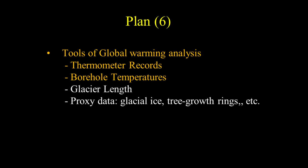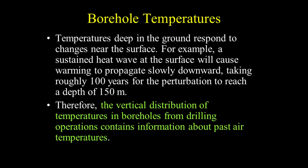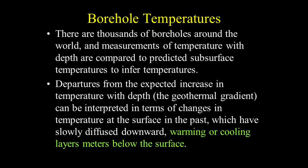Let's look at global temperature records obtained from borehole data. Temperatures deep in the ground respond to changes near the surface. A sustained heat wave at the surface will cause warming to propagate slowly downward, taking roughly 100 years for the perturbation to reach a depth of 150 meters. Therefore, the vertical distribution of temperatures in boreholes contain information about past air temperatures. There are thousands of boreholes around the world.